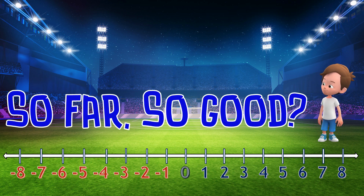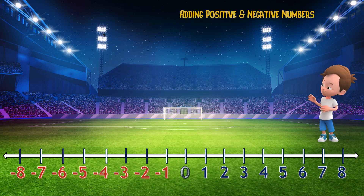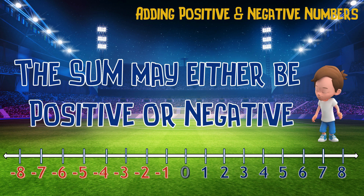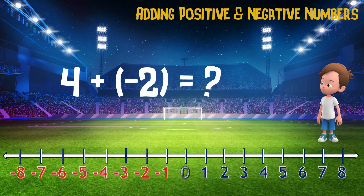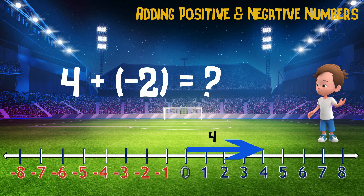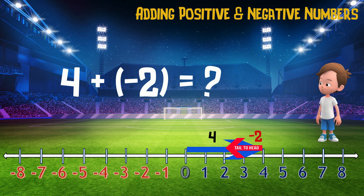So far, so good? Let's now move on to adding positive and negative numbers together. When adding positive and negative numbers, the sum may be positive or negative depending on the numbers being added. The first example is positive 4 plus negative 2. Placing the corresponding arrows on the number line, we have positive number 4's arrow pointing to the right from 0 to 4. Then negative 2's arrow pointing to the left with its tail fixed at positive 4's arrow head. The last arrow head is now at positive 2, which is the answer.